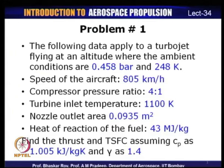This problem applies to a pure turbojet without any afterburning. Some of the given data are design parameters — compressor pressure ratio and turbine inlet temperature. The ambient conditions are 0.458 bar and 248 K, and the flight speed is also given. Before solving the problem, let us first understand the basic turbojet construction — the different components and their station numbers — and then take a quick look at the ideal cycle of a turbojet.